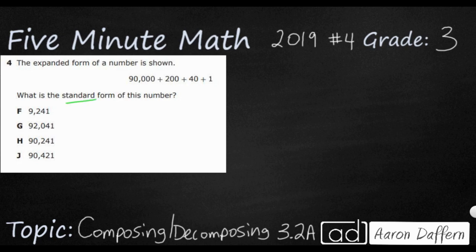And so remember that the expanded form is when you have the number showing as a sum of each value. So we've got 90,000 and then 200 and then 40 and then plus 1.